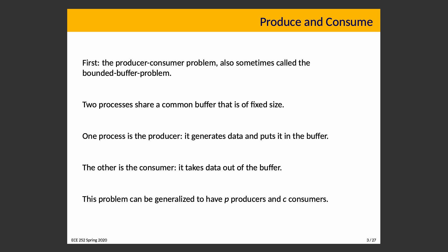This is also called the Bounded Buffer Problem in some books. The defining characteristic is that two processes share a common buffer of fixed size. One process is the Producer — it generates data and puts it in the buffer. What does it mean to generate data? It could be reading from a file, taking input from a user, generating random numbers, or measuring a temperature outside. As long as it makes something, it produces data.